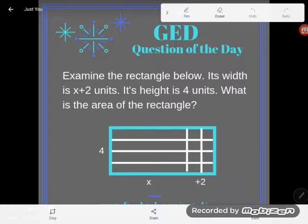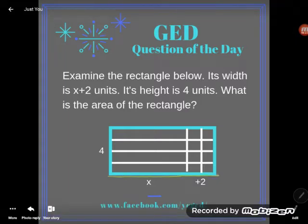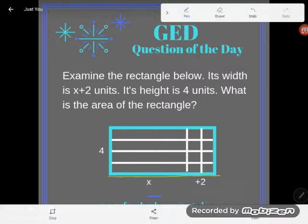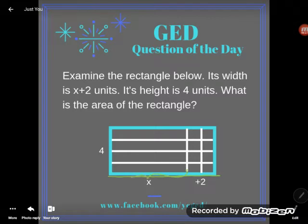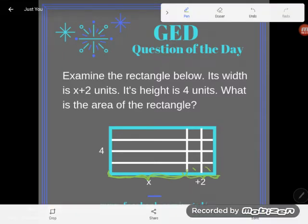And we can see they've marked it for us: X plus two units. Look at the way they marked it. They're telling us that this part here is X, some unknown number we don't know, and this part here is those two units. See, one, two. So it's X plus two wide. Its height is four units.